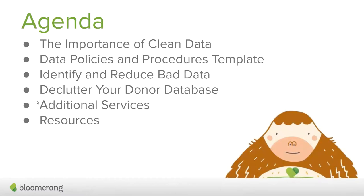We'll walk you through the different built-in tools in Bloomerang that you can use to identify and reduce bad data. We'll look at managing duplicate constituents and how to merge them, our national change of address or NCOA processing, deceased suppression, bad emails, and payment failures. We'll also look at how to declutter your database and considerations for deactivating or deleting a constituent.